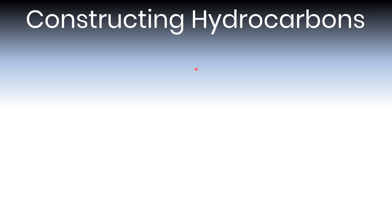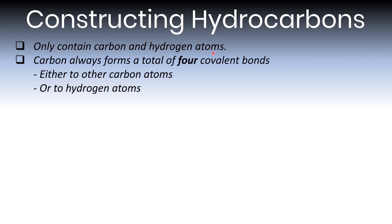Let's now have a look at how we can construct hydrocarbons and draw them for ourselves. The one thing you need to remember is that they only contain carbon and hydrogen atoms. Carbon must always form a total of four covalent bonds, which are represented by the lines in the diagrams. Carbon must bond a total of four times — no more and no less — and those bonds must either be to other carbon atoms, or if there are no carbon atoms left to bond to, to hydrogen atoms.